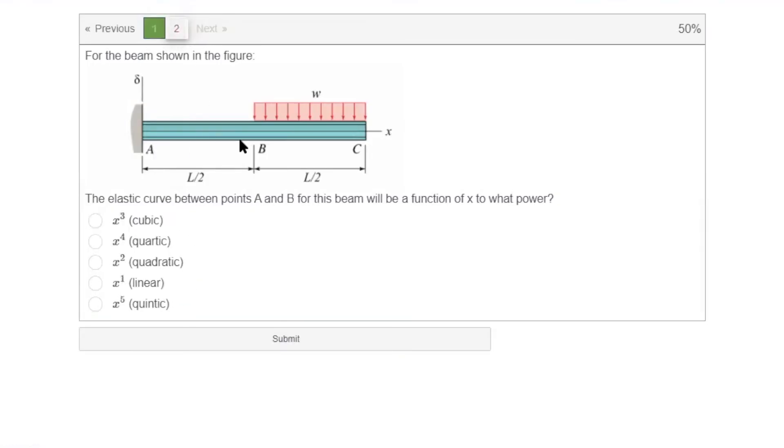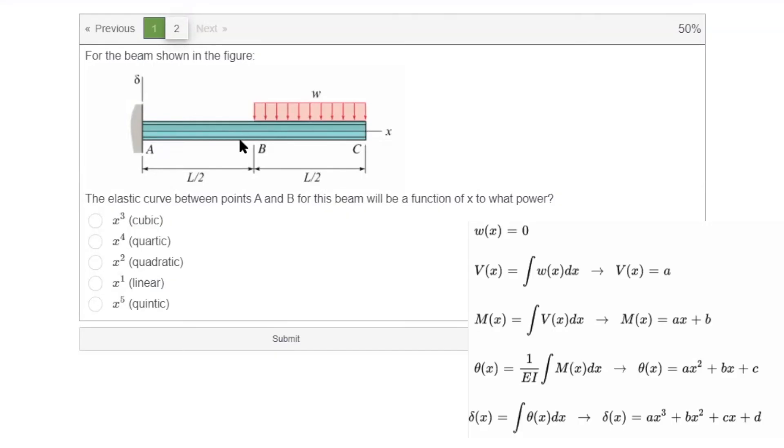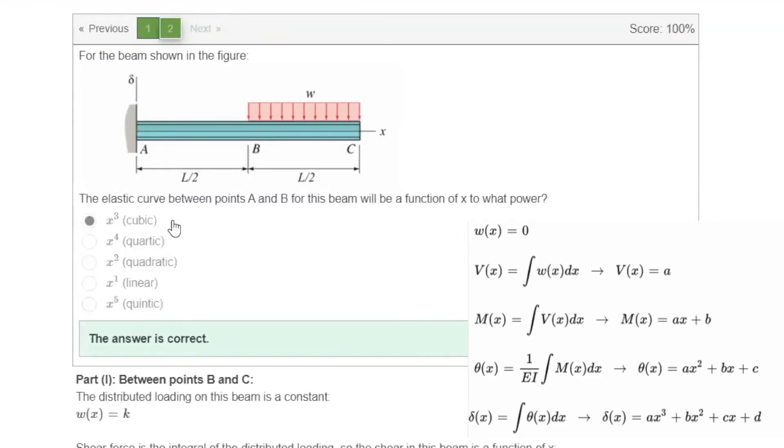What about between A and B? Between A and B, there is no loading. It's zero. That means shear is going to be constant. So power for shear would be zero. Moment would be one. Slope would be two. Deformation would be three. So in that case, it is going to be cubic. And that could be applied to many other cases.